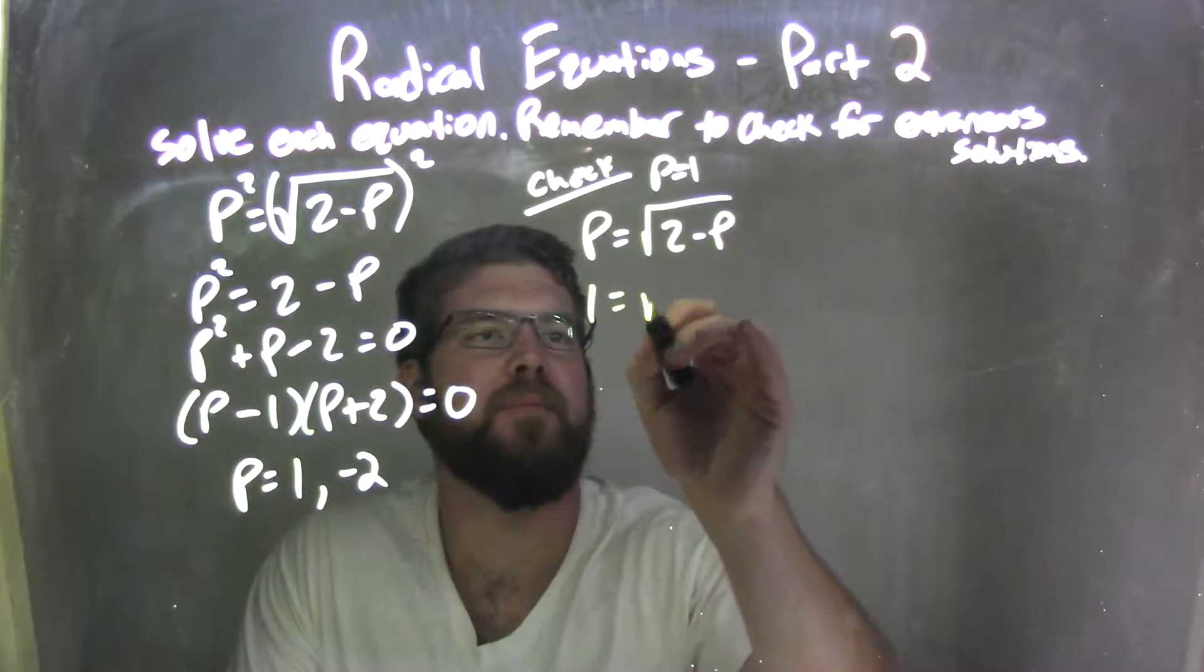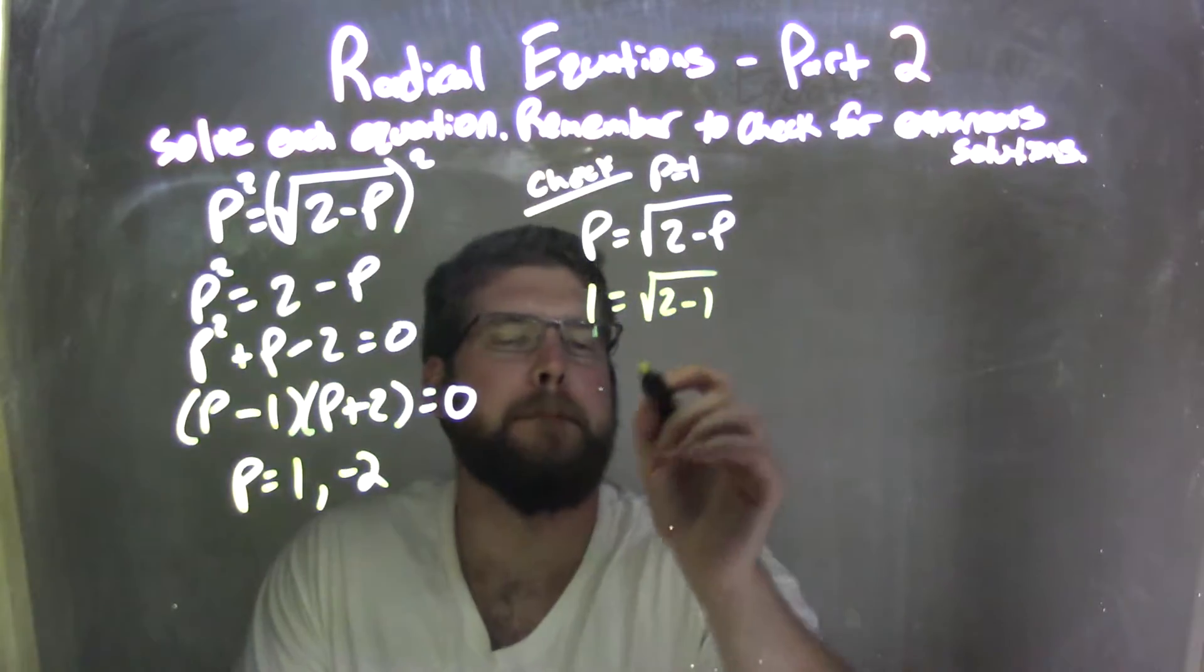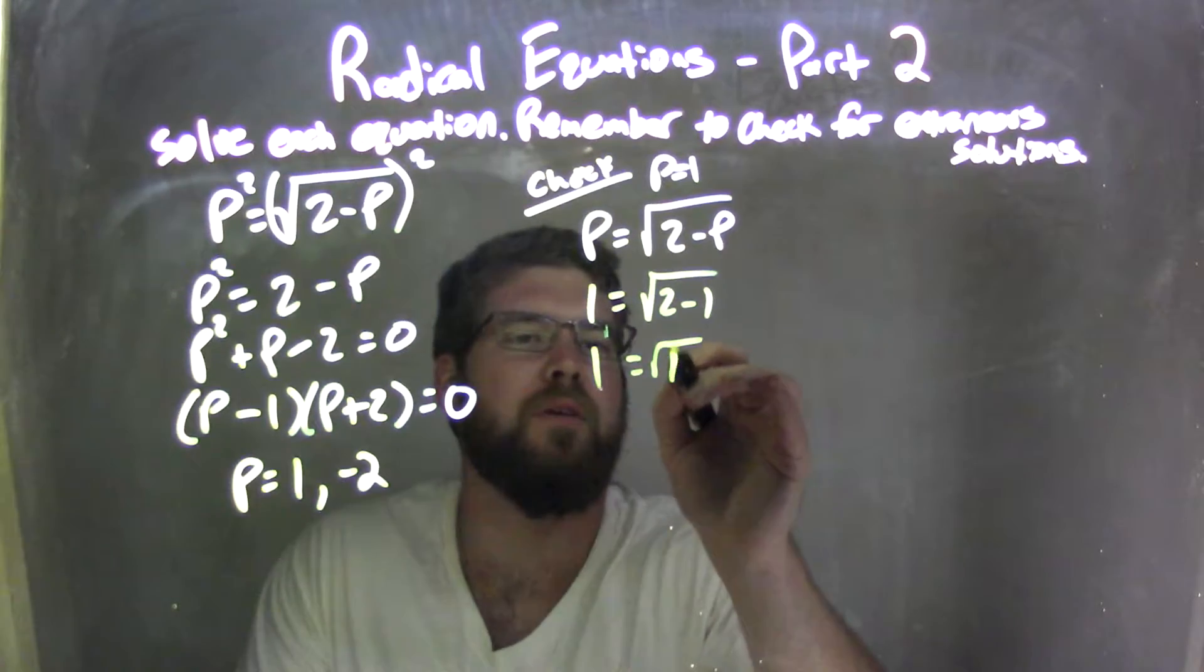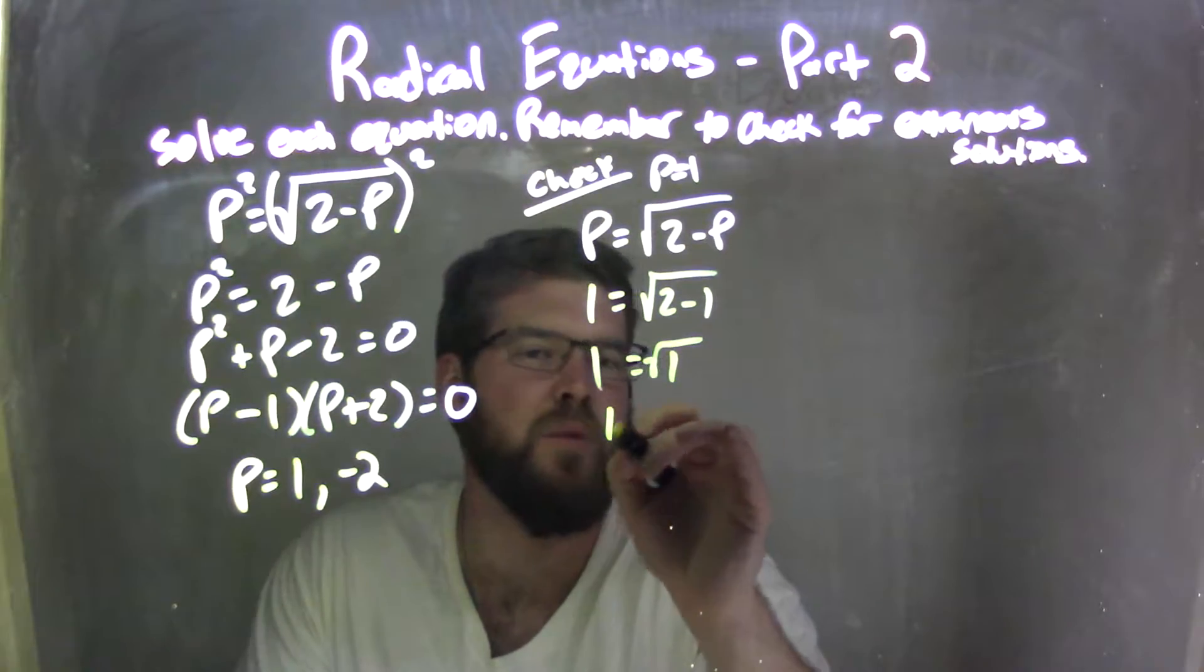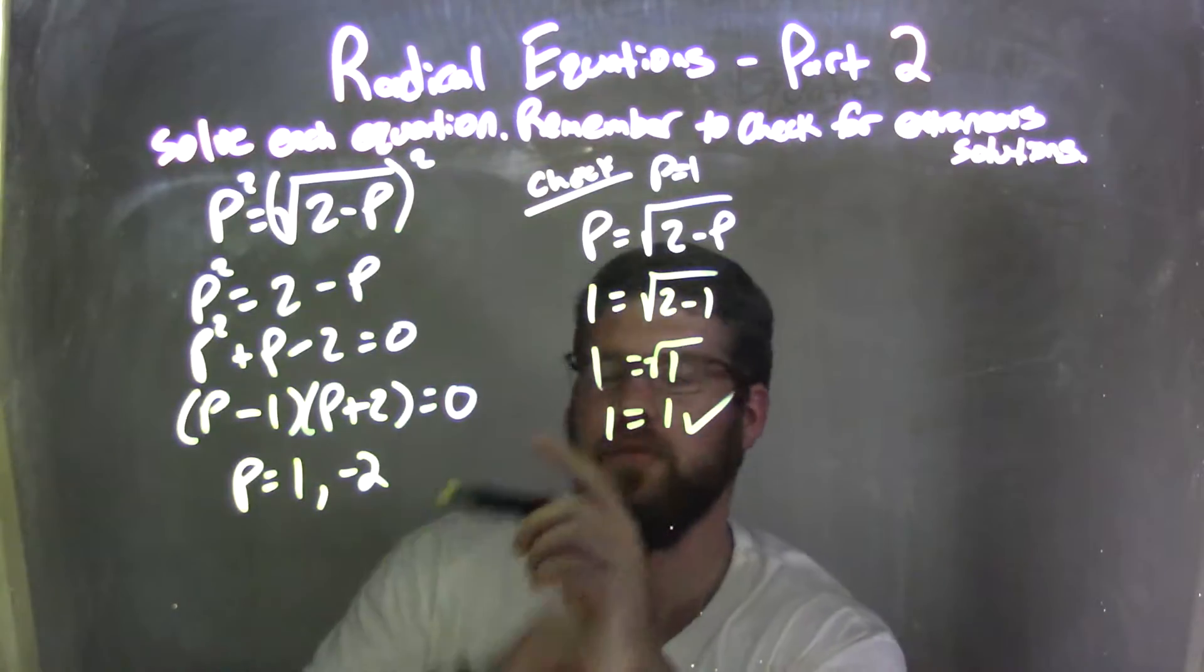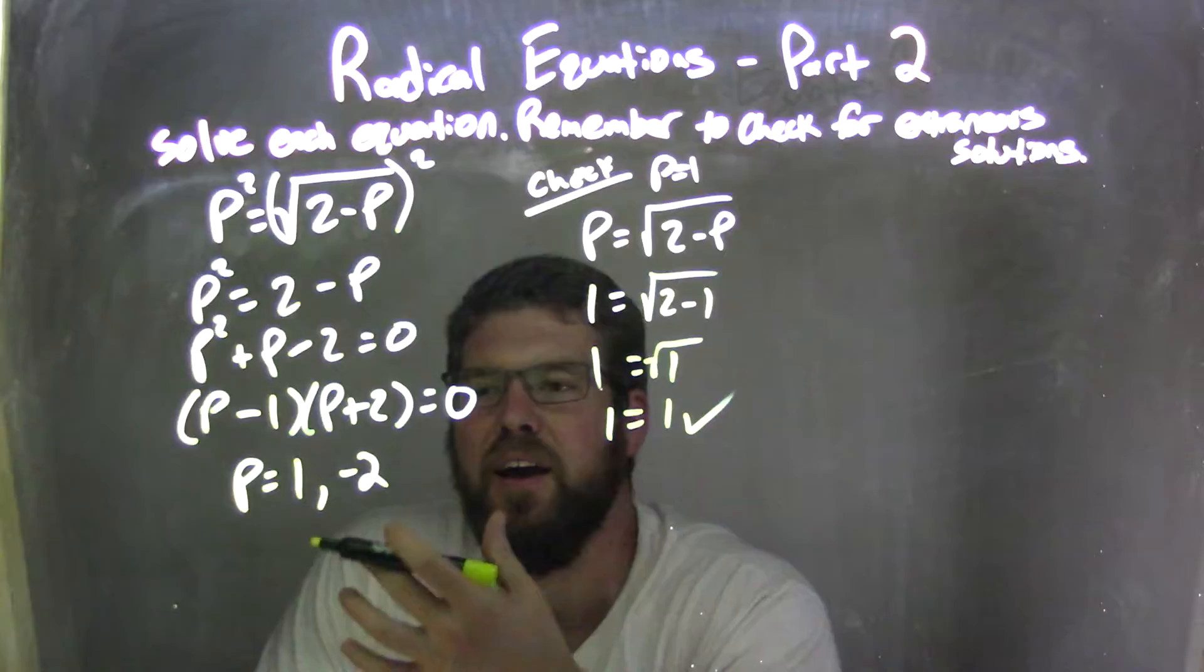So 1 goes in here. 2 minus 1. 2 minus 1 is just 1. Fantastic. It's square root of 1, and square root of 1 is just really 1. Great. True statement. So I know p equals 1 is a true solution.